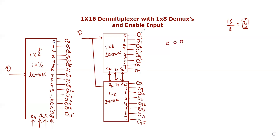The first demux handles outputs O0 to O7, and the other demux handles outputs O8 to O15. If you want to control both of them, you use a controlling signal called ENABLE.